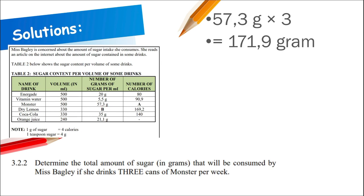Question 3.2.2: determine the total sugar in grams consumed by Ms. Bagley if she drinks three cans of Monster per week. Go to the Monster row, find the grams of sugar, multiply by 3, and get 171.9 grams.